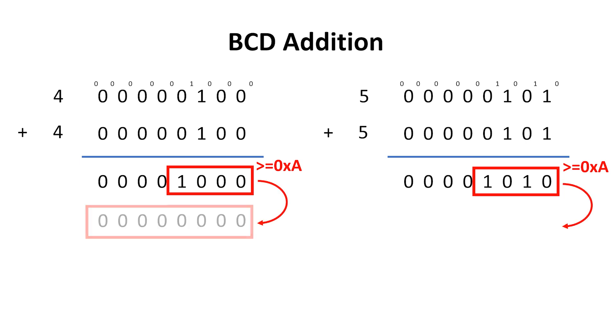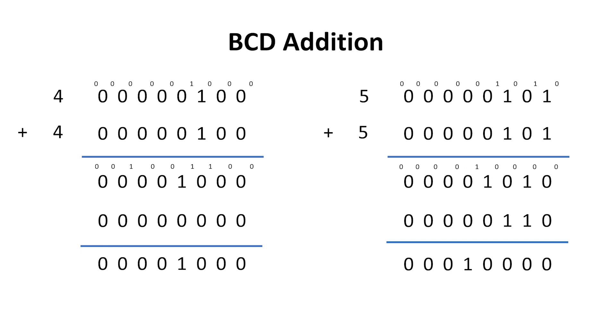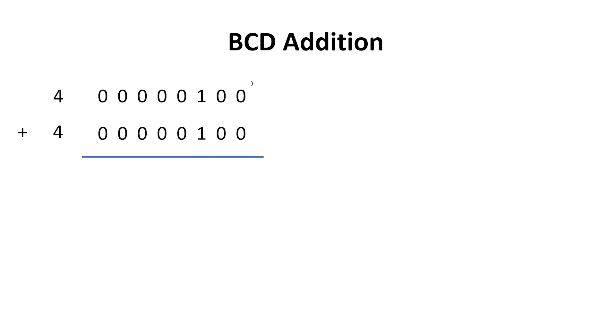If it's less than 10, then we add 0. But if it's greater than or equal to 10, then we need to add 6 with carry. The reason we need carry is so that the 0A becomes a 1, 0, which is what we want, 10 in decimal. We need a circuit that detects 10, but that by itself isn't enough. On the left, we add 4 and 4, and we get 8, which is what we want.